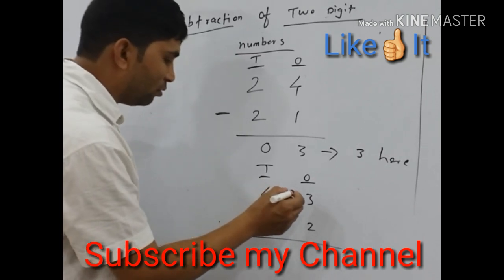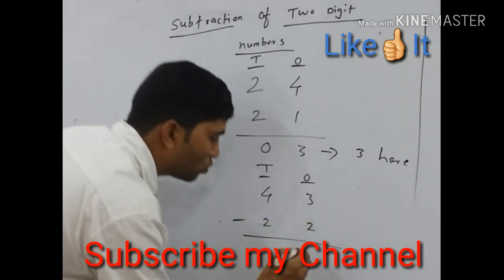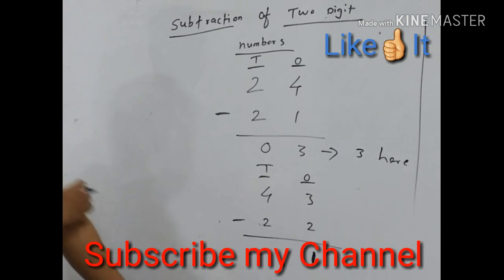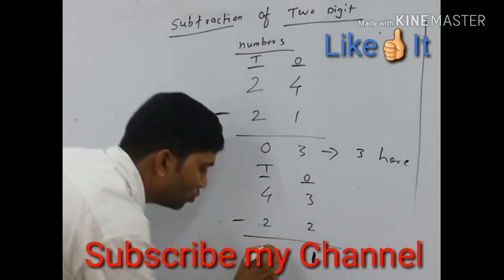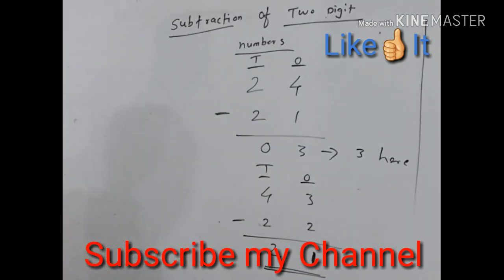First of all, we subtract ones place digit: 3 minus 2, we get 1. And next, tens place number: 4 minus 2, we get 2. Finally, we get answer 21.